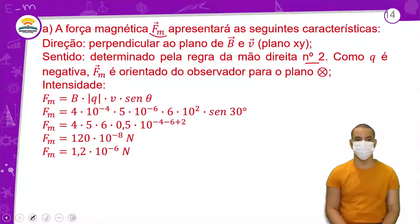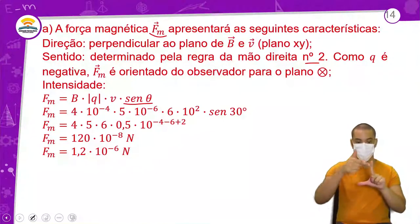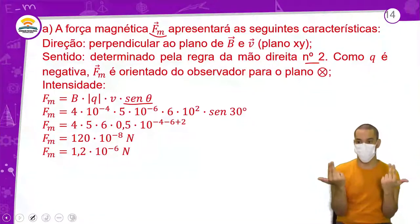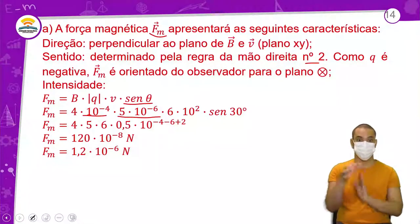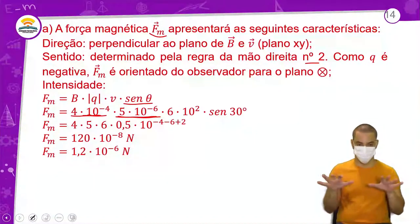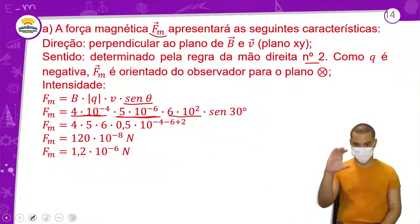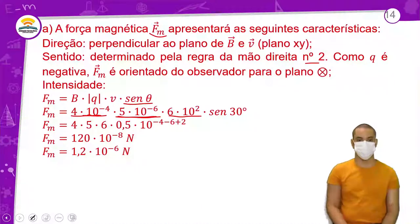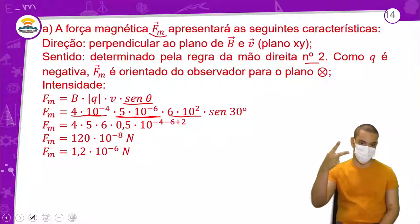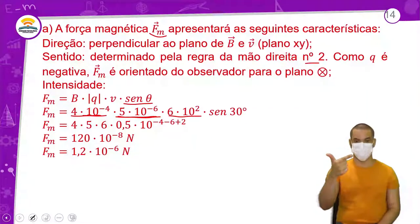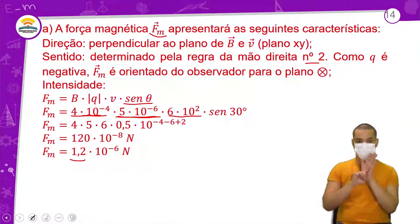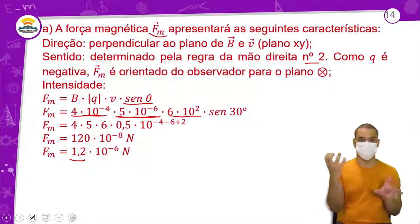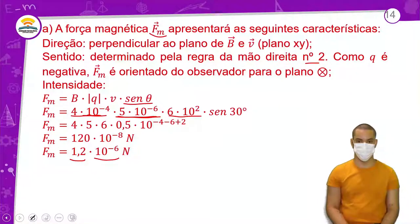Para a intensidade: como tem um ângulo, acrescenta o seno. Força magnética = 4 × 10⁻⁴ (campo) × 5 × 10⁻⁶ (carga, em microcoulombs) × 6 × 10² (velocidade) × seno(30°). Multiplica os valores: 4 × 5 × 6 = 120. Soma os expoentes: −4 + (−6) + 2 = −8. Resultado: 120 × 10⁻⁸. Colocando em notação científica: passa a vírgula duas casas para a esquerda e soma 2 no expoente, ficando −6.